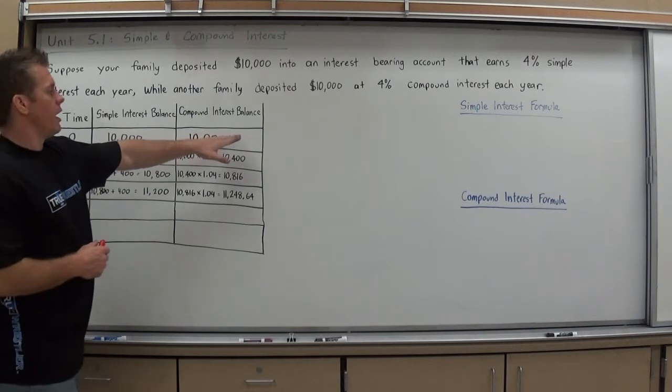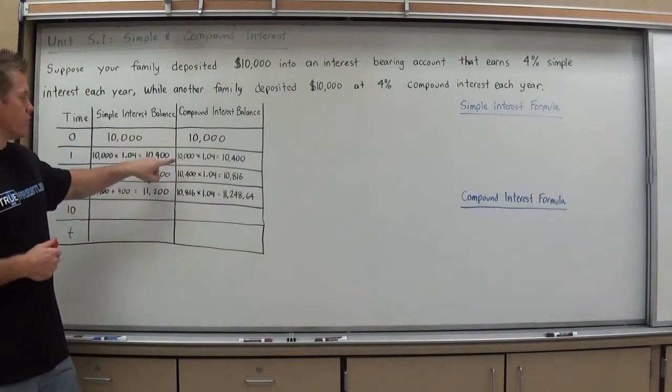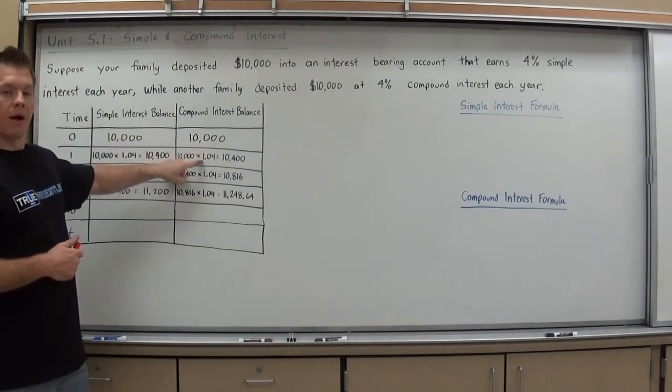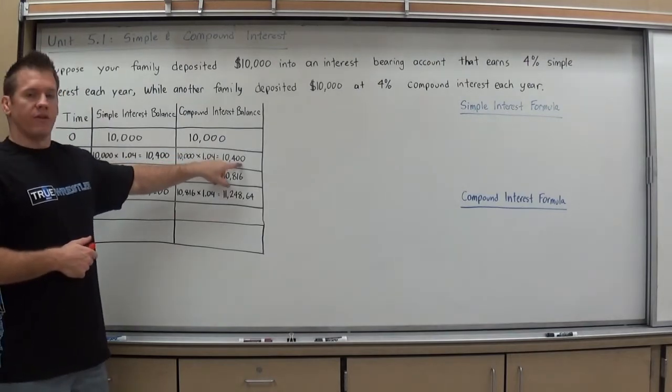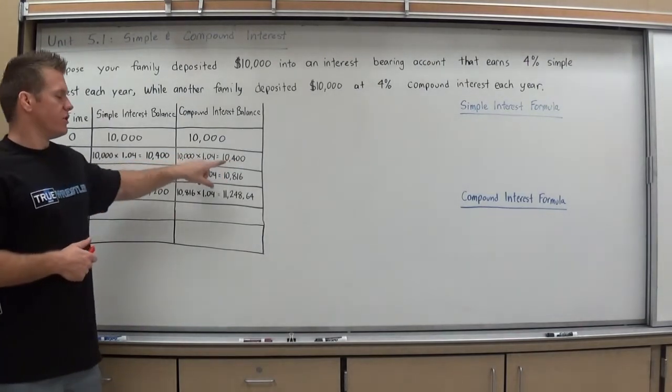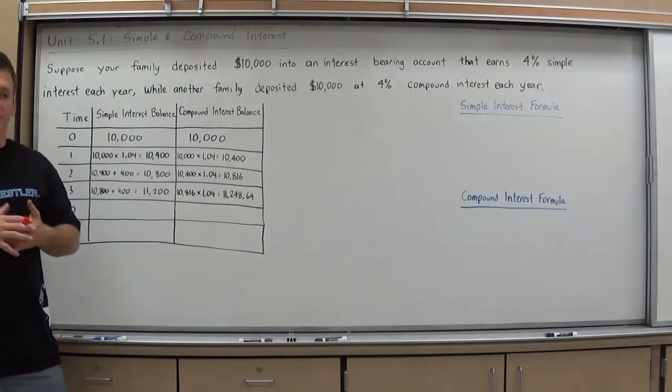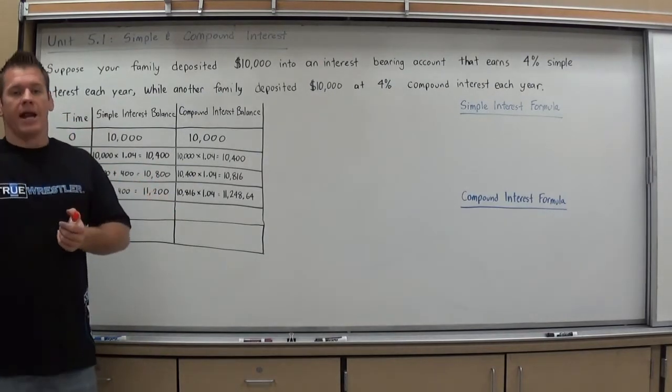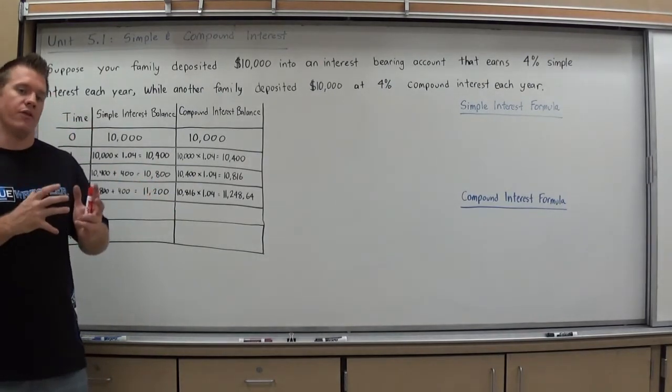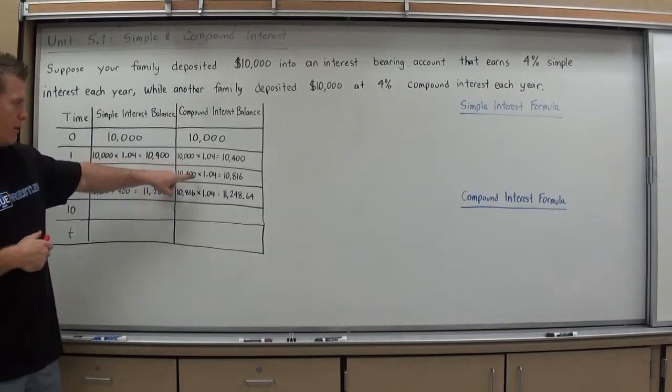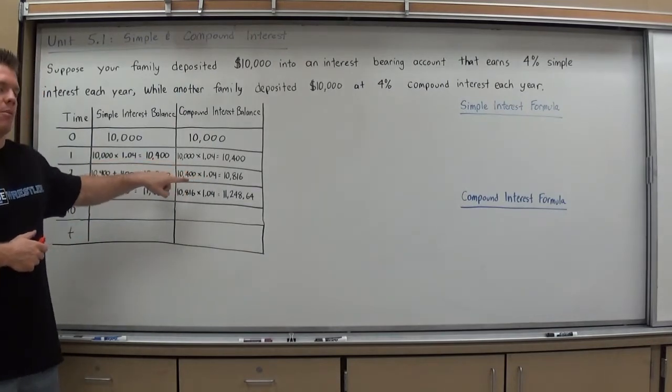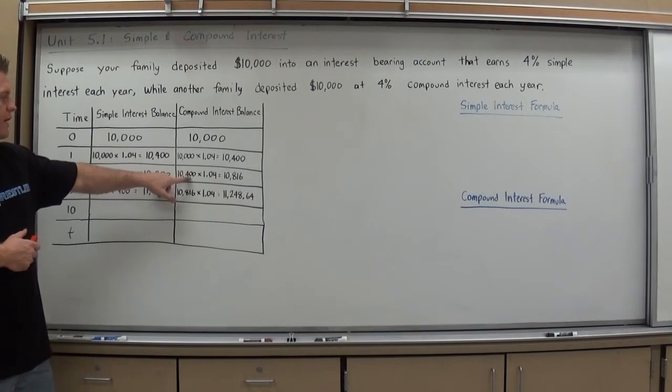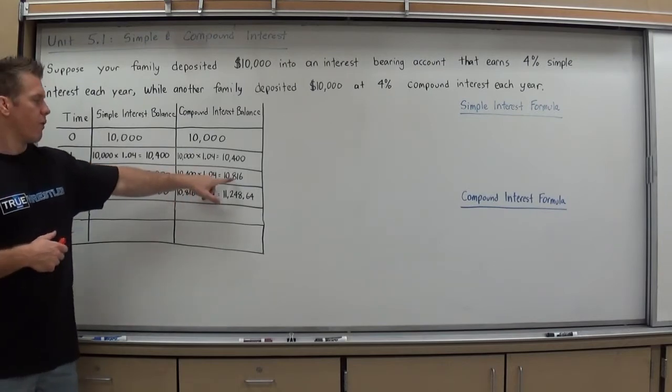Compound interest is going to work the same way initially. It's going to be $10,000 times that .04 added in, so times 1.04, and you get this amount of $10,400. But in compound interest, what's nice is they take that interest you earned, add it back to the account, and now calculate the interest off that new balance, which means every year you're getting interest on a little bit more money.